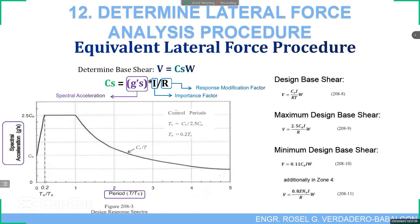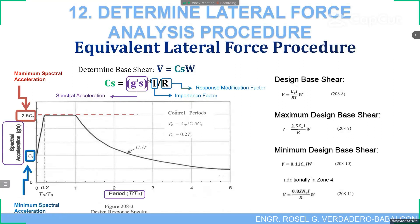Looking at the y-axis of the design response spectra, the minimum spectral acceleration is 2.5CA and this is also the minimum spectral acceleration value. Note that 0.11 is equivalent to 1/9, meaning that when using the formula CS times W, R effectively equals 9 for the minimum base shear case.